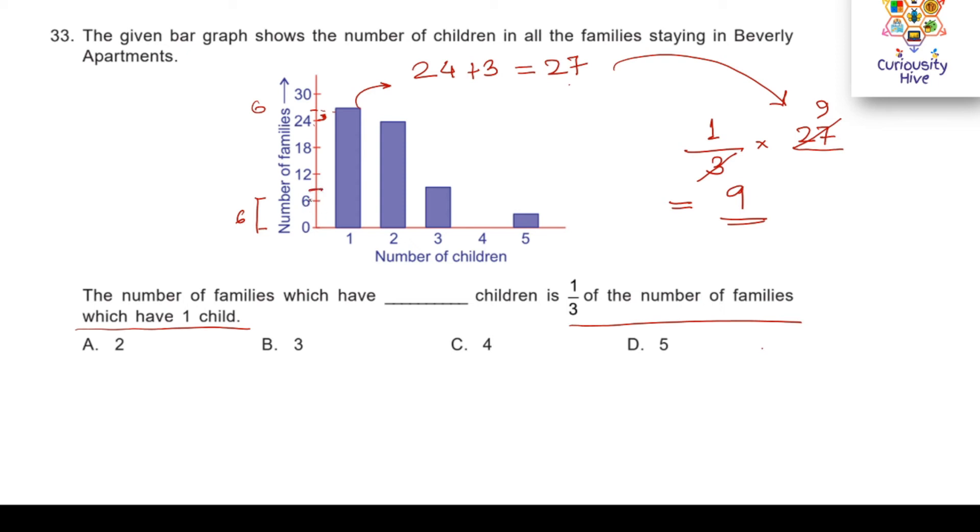We need to find that bar which has the number 9 and the number of families. 9 is somewhere here because this is half, 6 plus 3 is 9, which matches this bar. That means number of families which have 3 children is one third of the number of families which have 1 child. Hence, answer option B is the right answer.